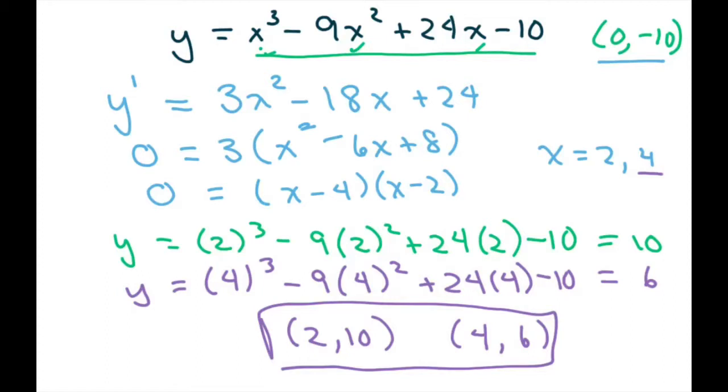Now we're going to take the second derivative to test for inflection point and concavity. We have y prime was 3x squared minus 18x plus 24. So our y double prime or second derivative is 6x minus 18.